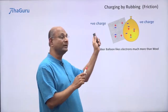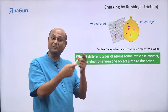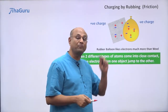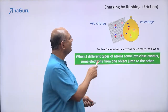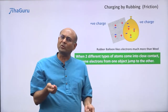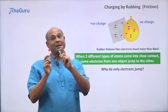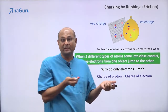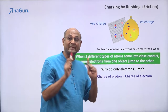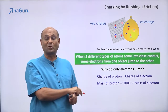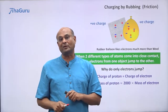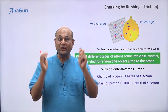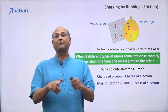Anytime you take two different objects — two different types of atoms — and bring them into close contact, some of the electrons from one object can jump over to the other. Why do only electrons jump? Why can't protons jump? It turns out that electrons and protons have the same charge, but that doesn't mean they are the same size. The mass of a proton is 2000 times the mass of an electron — they have the same charge, but the proton is 2000 times bigger.